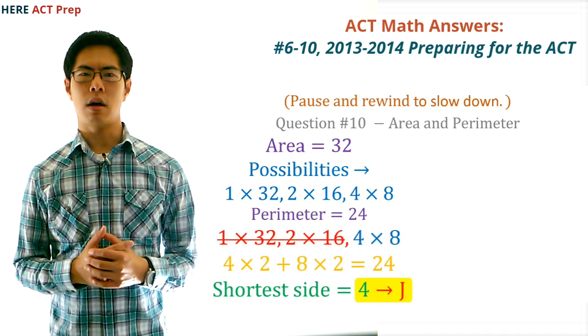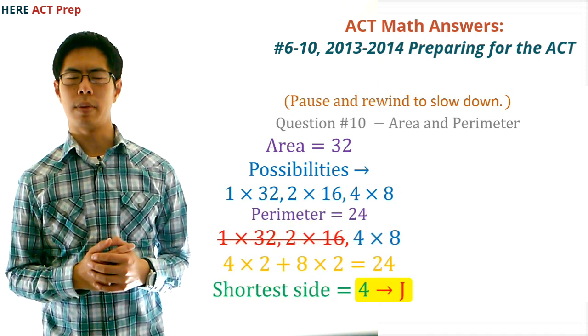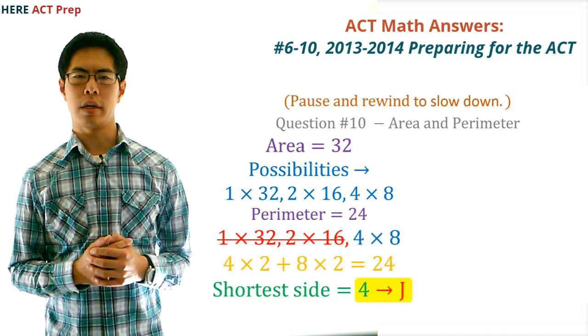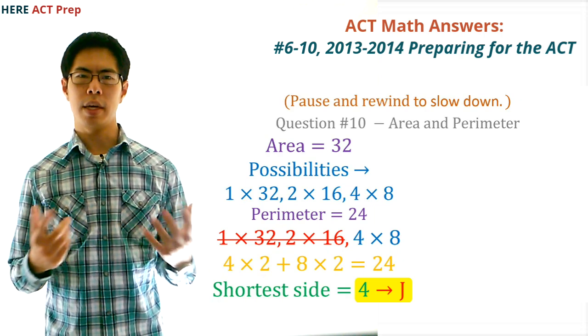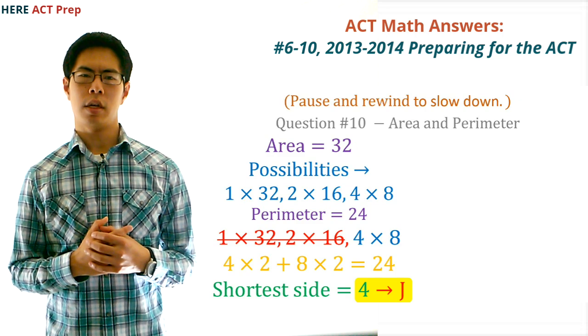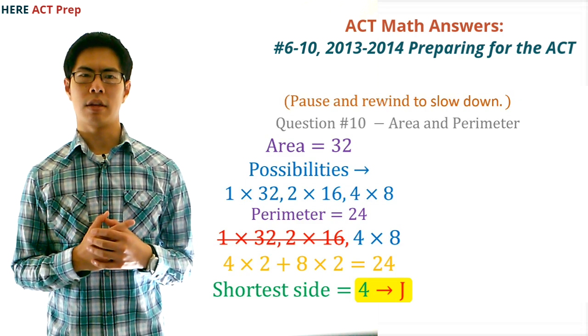Next, we figure out which of these also fit the perimeter requirement, which is going to be 2l plus 2w equals 24. We quickly find out that 1 and 32 and 2 and 16 are way too big, leaving us with 8 and 4. So, 4 is the shortest of the side lengths.